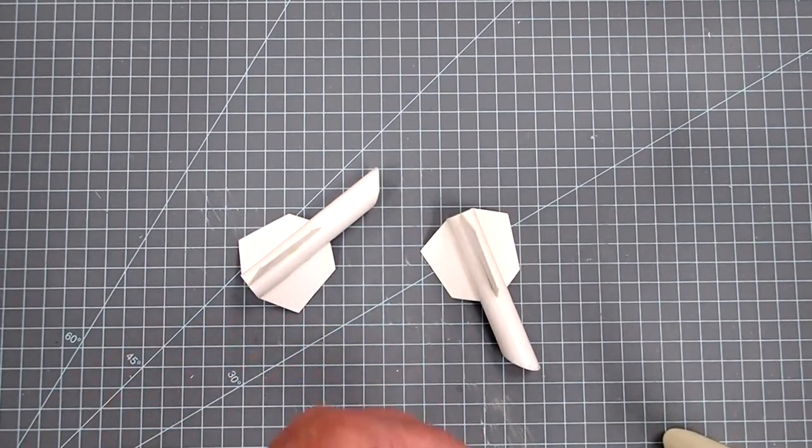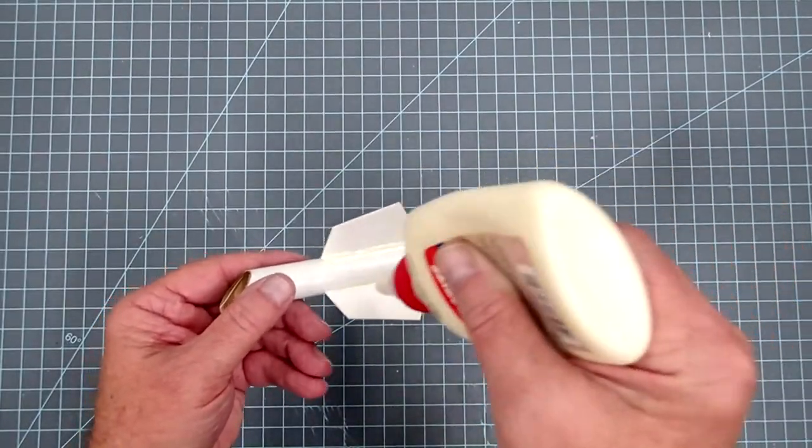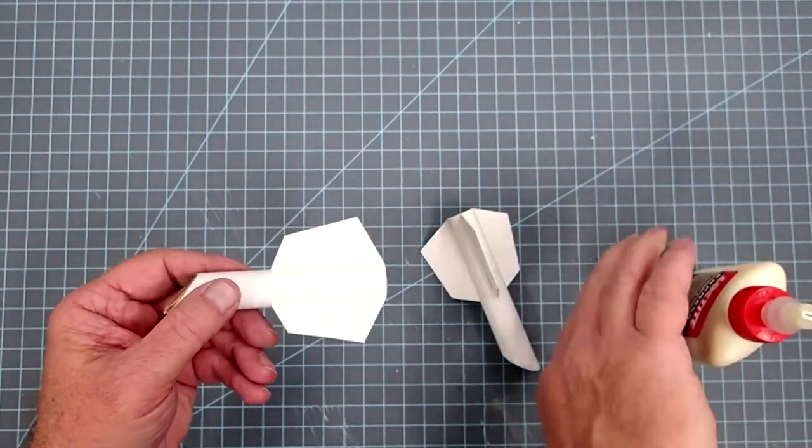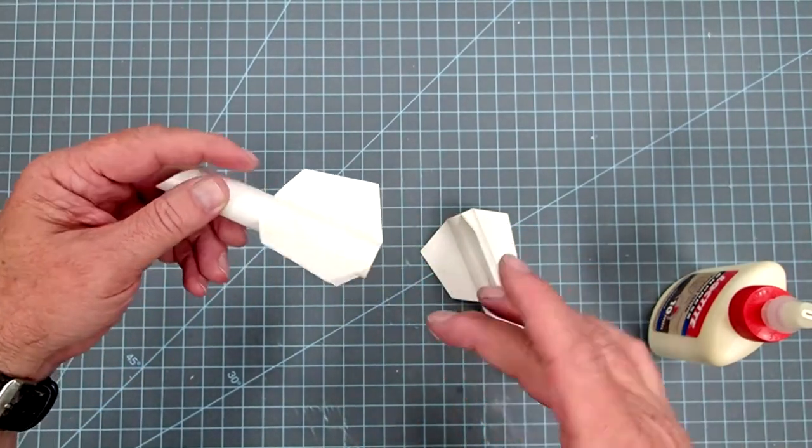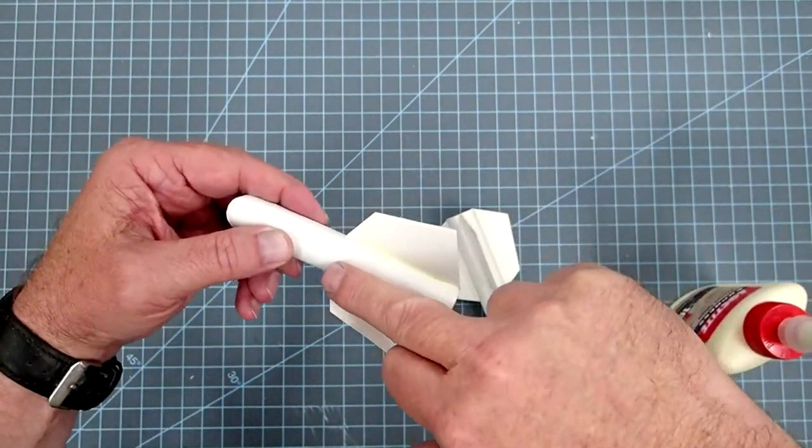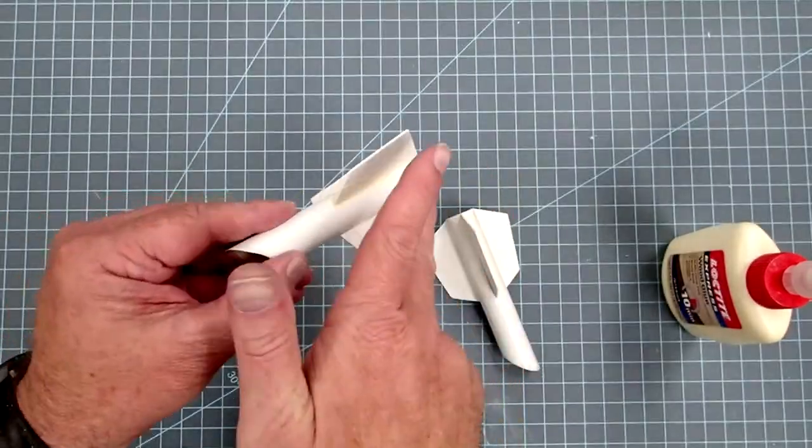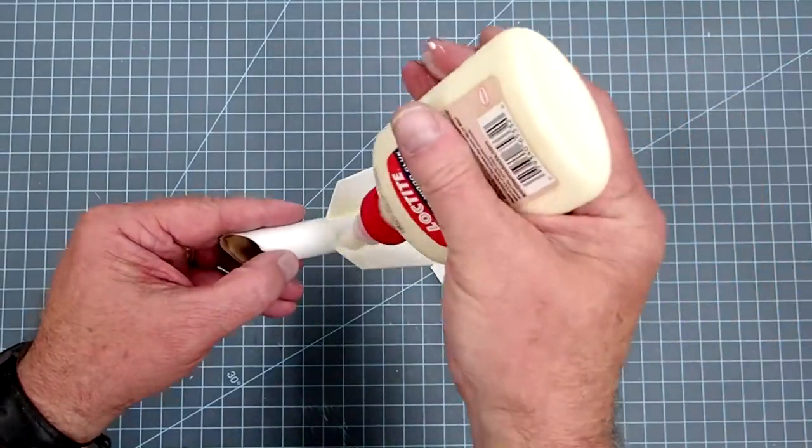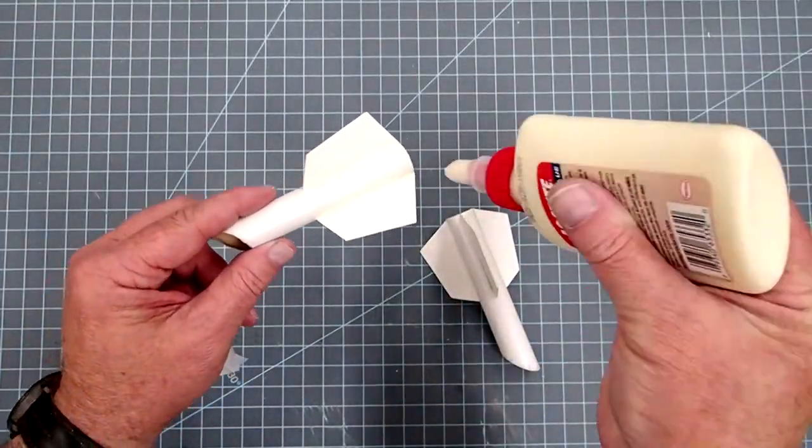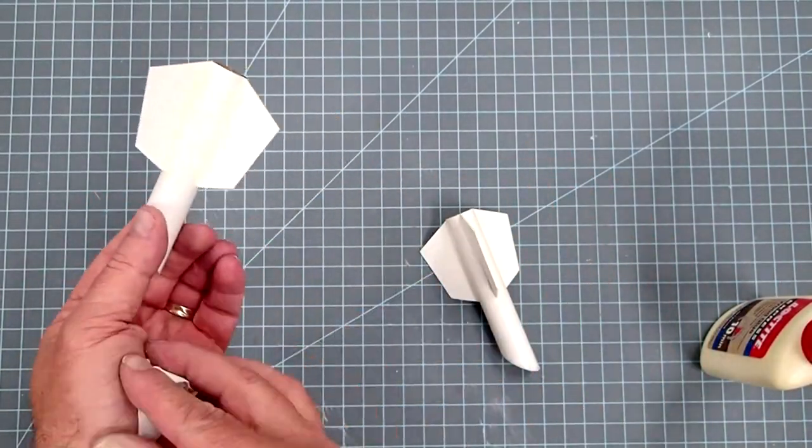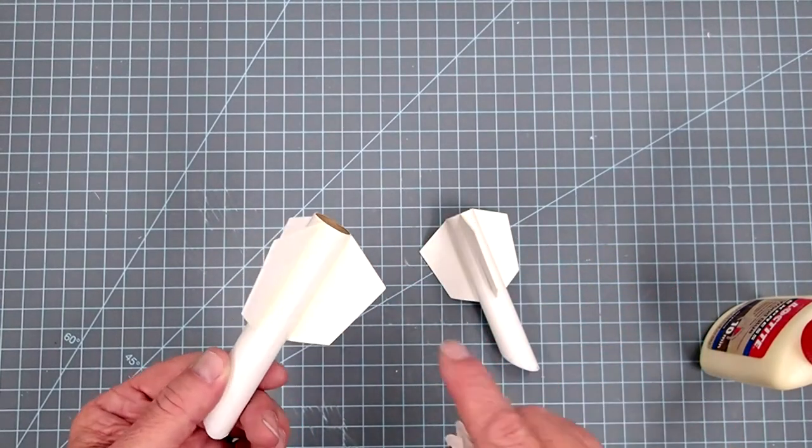The glue on the fins for the two outriggers is dried. And so now we simply need to apply the fillets to them. And here I'm just going to use the wood glue again. And we'll run a bead along each side here. And then simply smooth those. And put the excess onto the next fin. All right, and now I'll just repeat this on the other outrigger, and then we'll be about ready to put the two together.